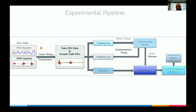What we did was take EEG segments and EMG segments — independent from different users but real data, not artificial. We linearly mixed them: taking the EEG data and mixing EMG into it at different SNR levels. We created artificially corrupted EEG data and then split the dataset into training, validation, and test sets — 80% training, 20% of training as validation, and the remaining 20% of the full dataset as a completely independent test set.